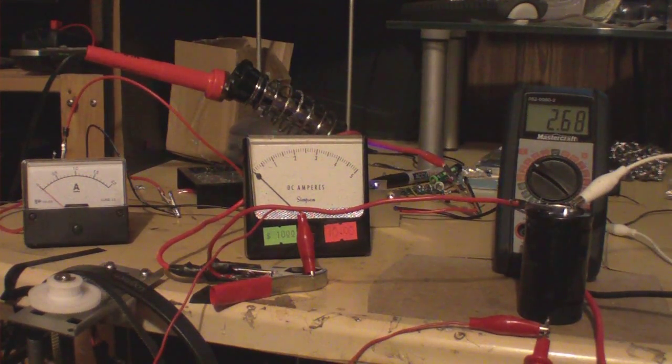OK, so there you got the output, the CV, 2.68 coming off the buck. On the left you got the ammeter coming in from the 12 volt power supply.